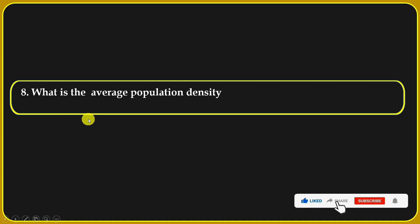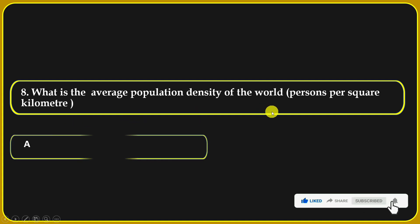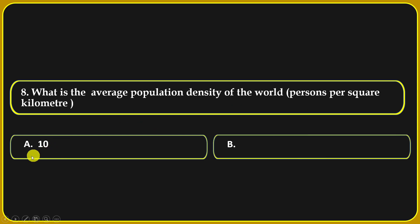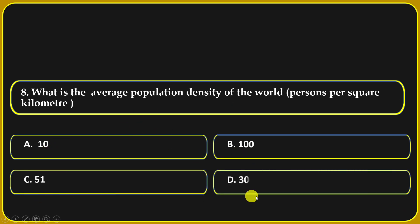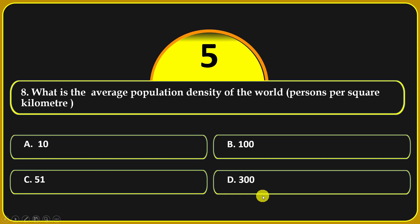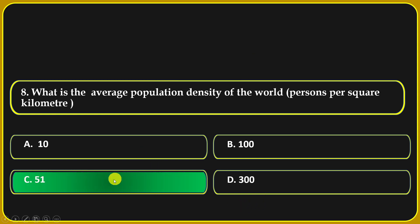What is the average population density of the world, in persons per square kilometer? Options: 10, 100, 51, or 300. 51 is the correct answer.